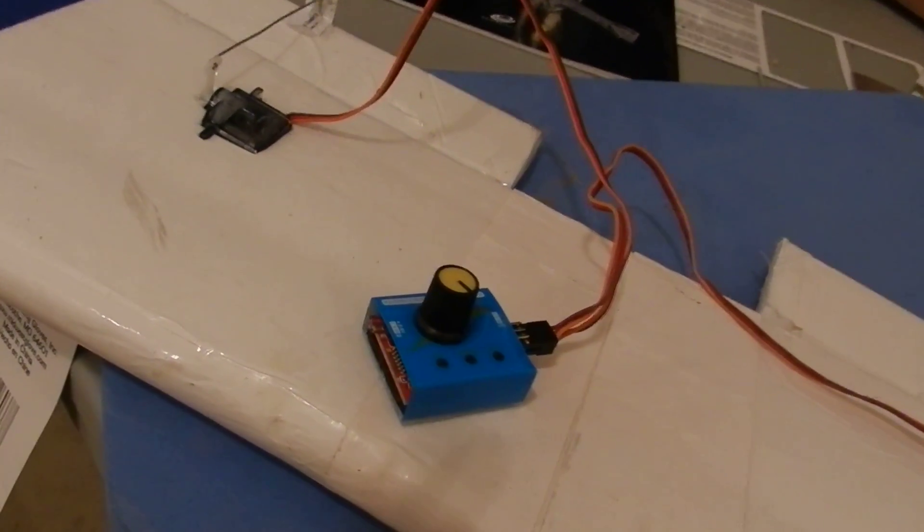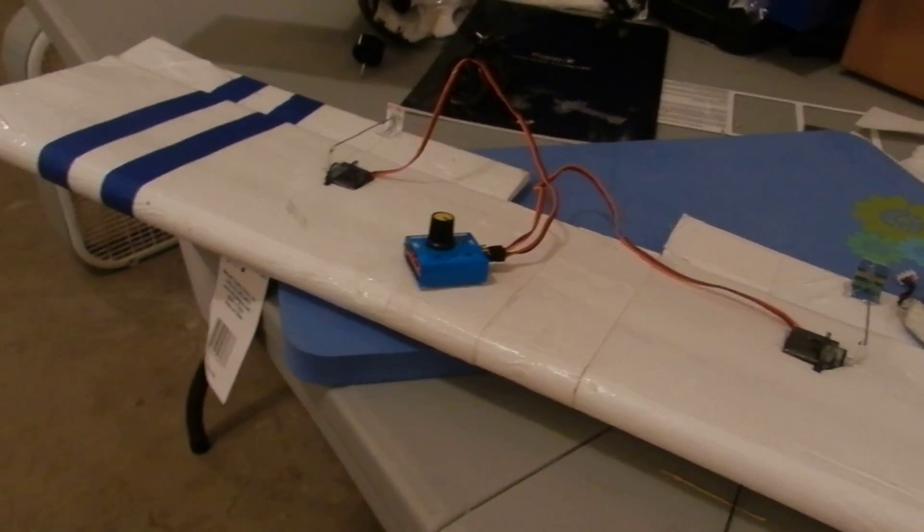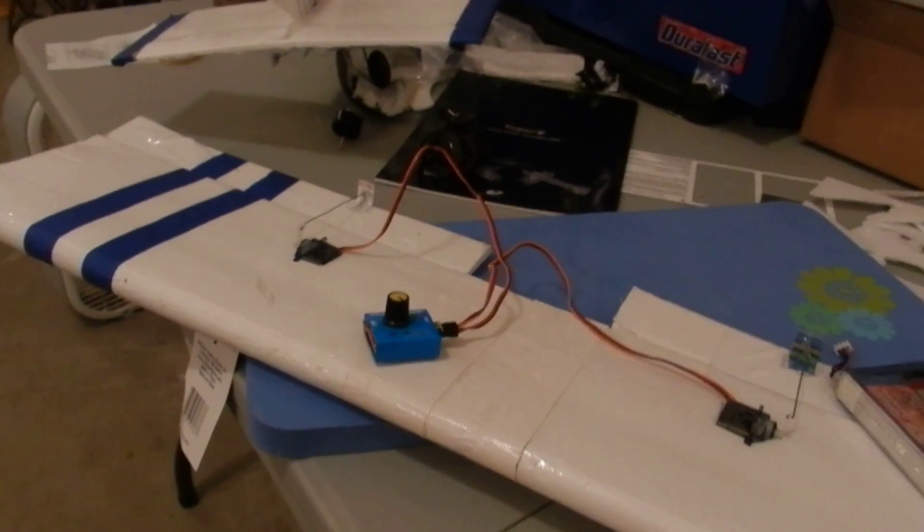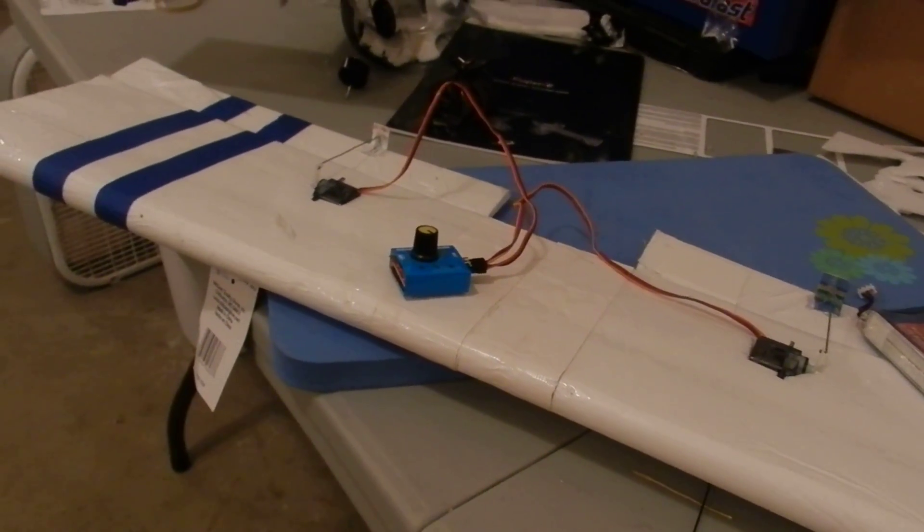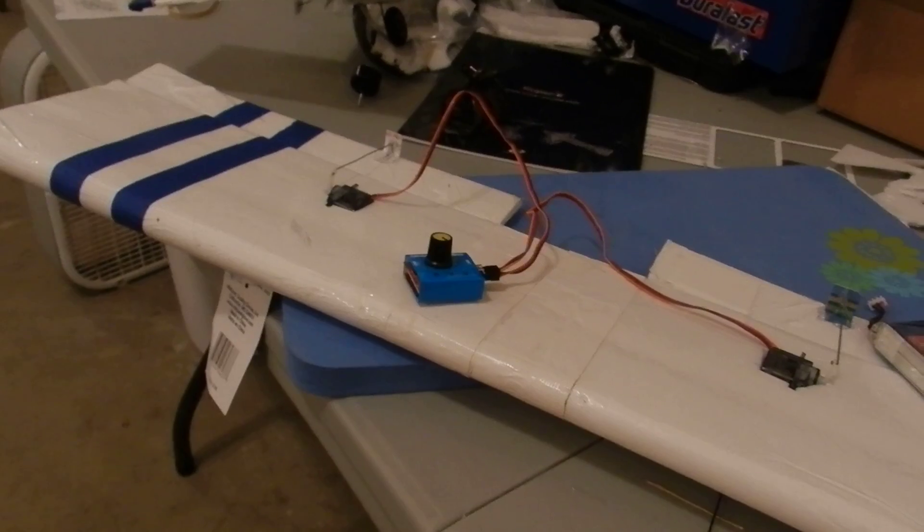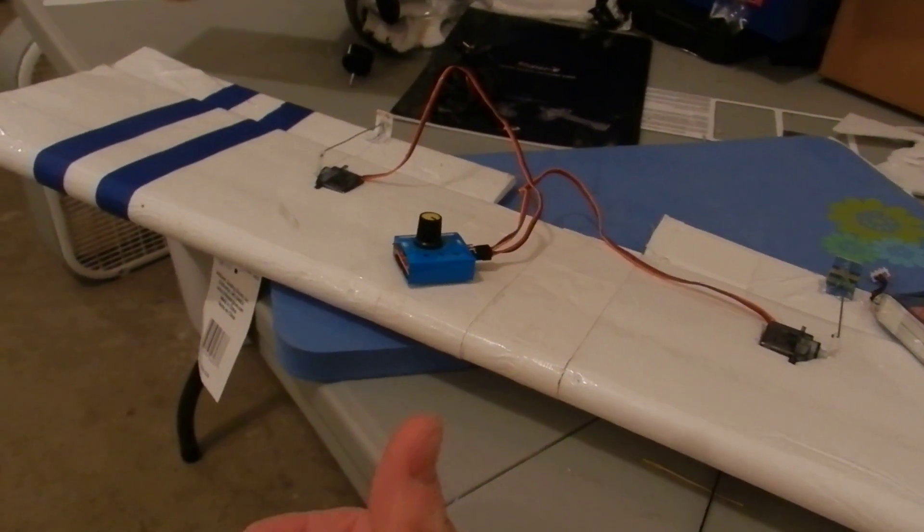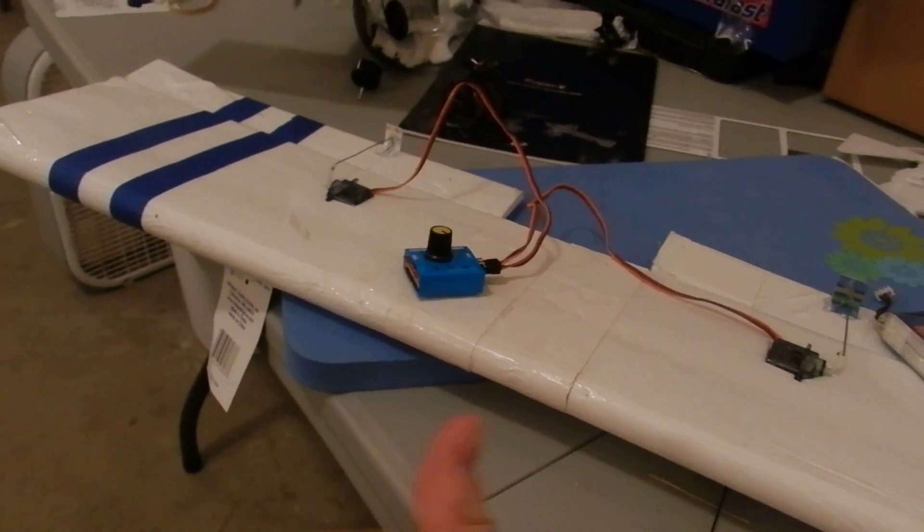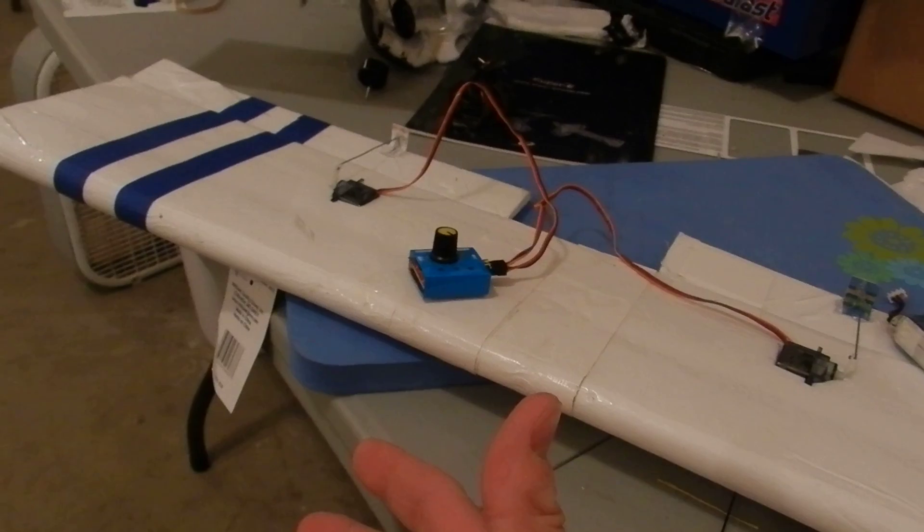So really in the past, the only way you could get around this is just literally hook your receiver up, bind it to your transmitter, set everything to center, see where everything shakes out. Well that's kind of cumbersome, especially if you're building the plane and you don't really have your receiver installed. So that's where the servo tester comes into play.